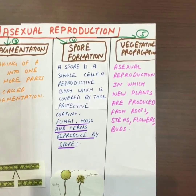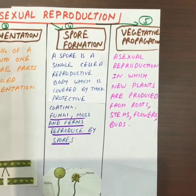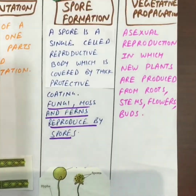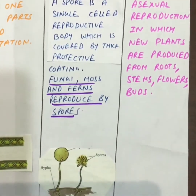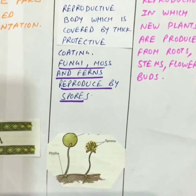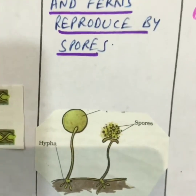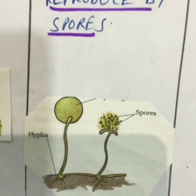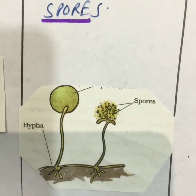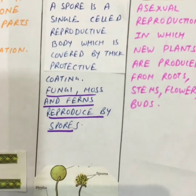Spore formation. A spore is a single-cell reproductive body which is covered by a thick protective coating. Fungi, moss, and ferns reproduce by spores. To understand this better, we are going to have a look at a live fern.